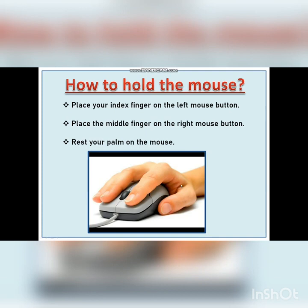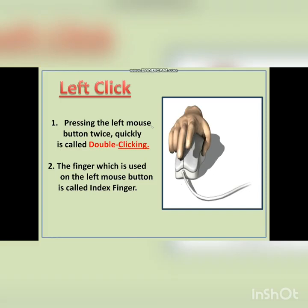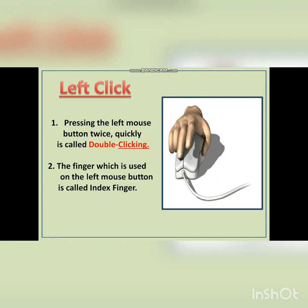Left click. Pressing the left mouse button twice quickly is called double clicking. The finger used on the left mouse button is called the index finger. In the video provided on the slide, you can see the person clicking the left mouse button with the index finger. When he presses the left mouse button twice quickly, that is called double clicking.